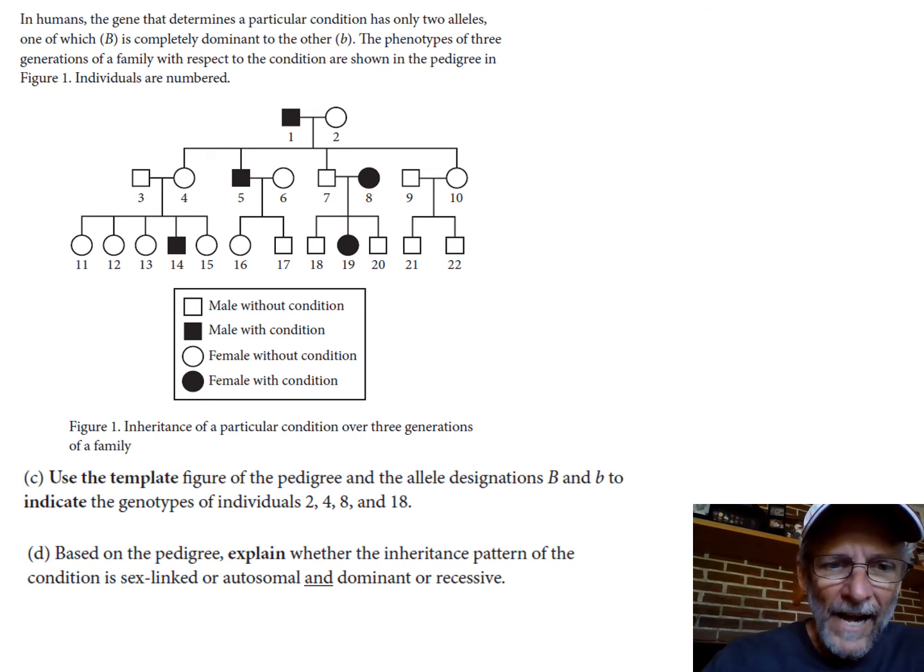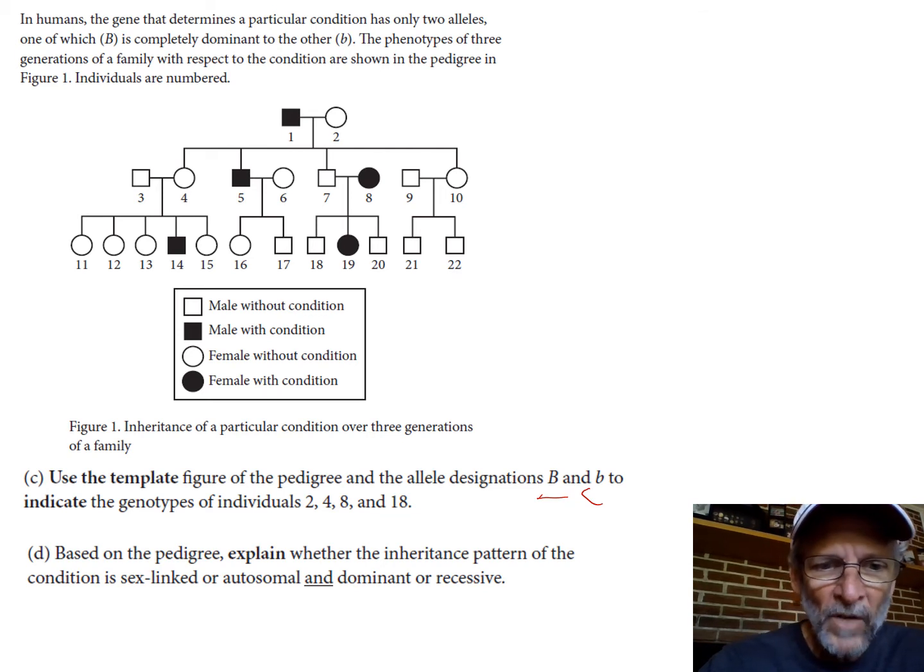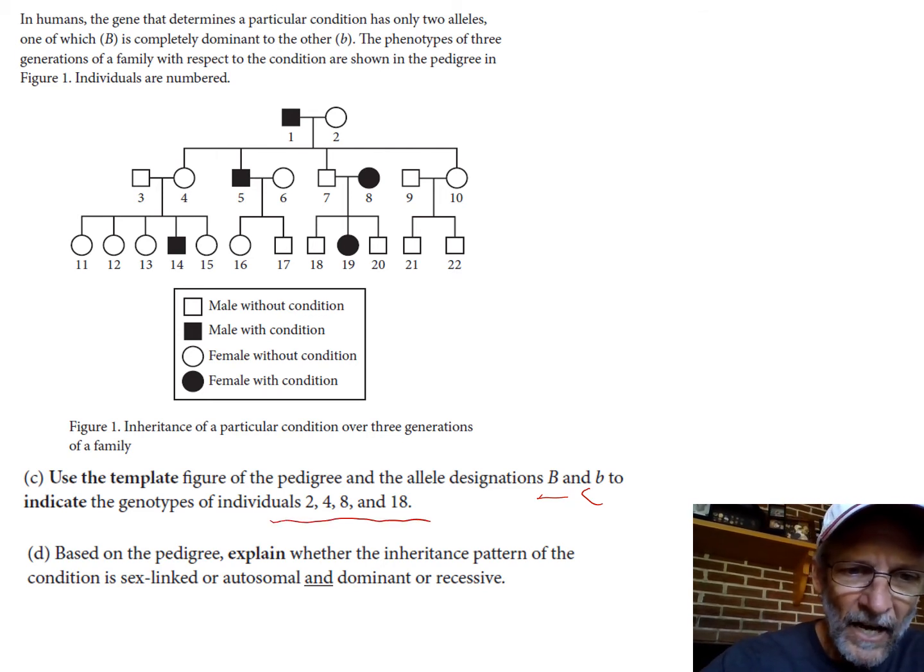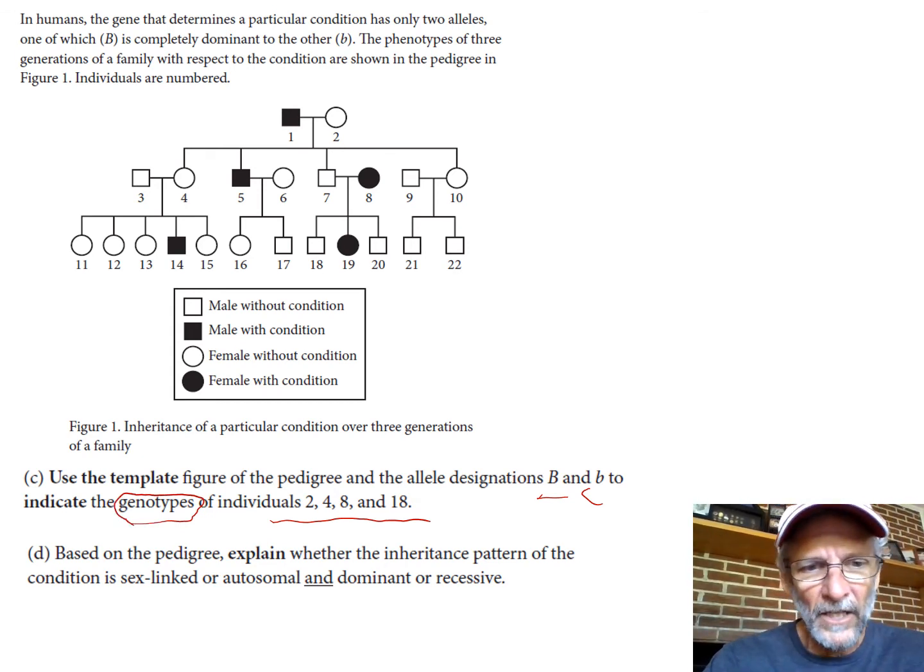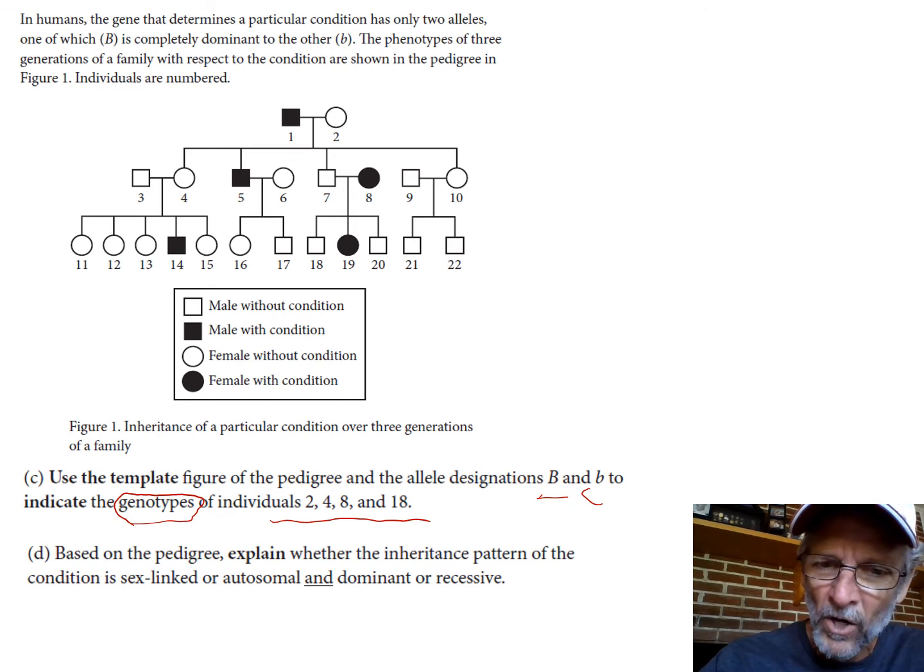Now they ask you to use the template, use the pedigree and use our letters that we told you, Big B and little b, to indicate the genotypes of these guys. Remember back in the lessons where they said students often mix up what genotype and phenotype is? Even if you know what that is, sometimes in the process of a test you give them the wrong thing. They want genotypes so they want letters, they don't want do they have the condition or not.